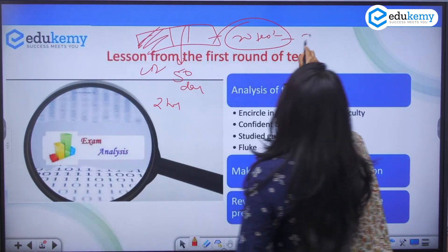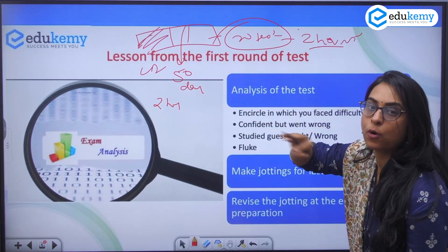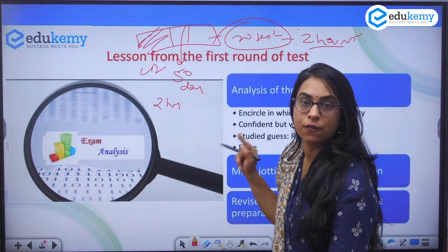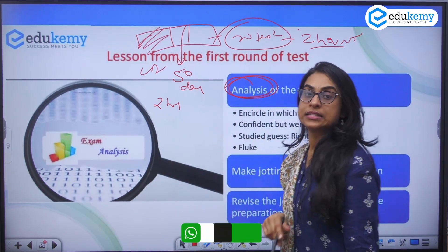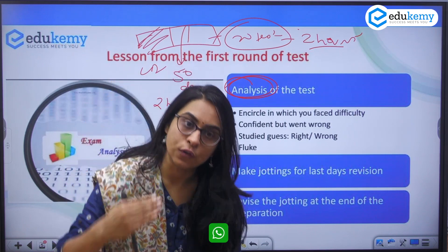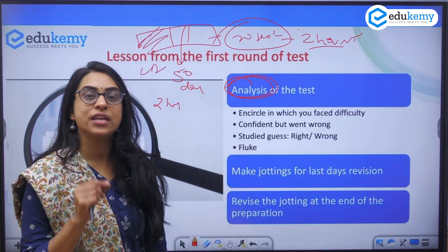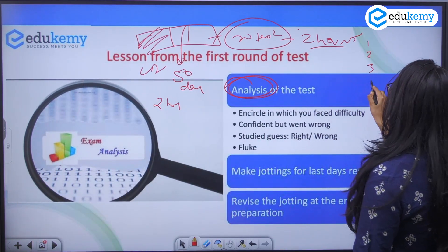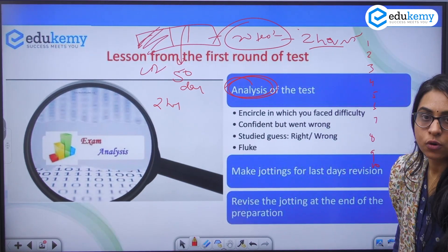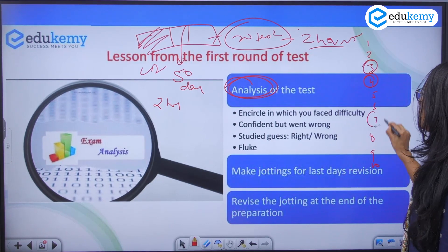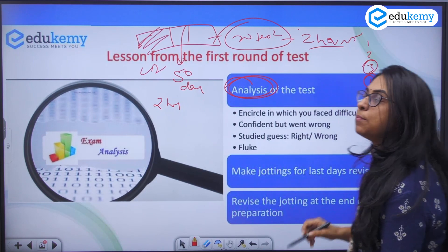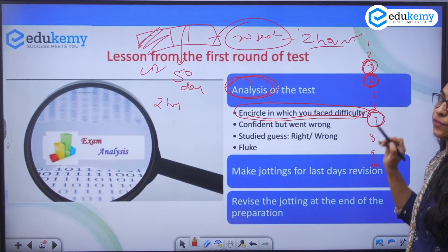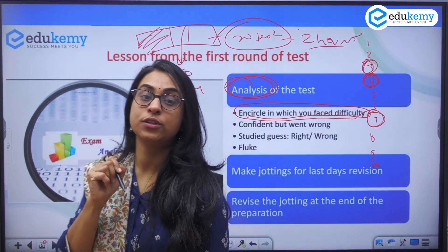These 20 tests require that you sit with the OMR sheet in exam-like conditions and analyze the test afterward. While solving the paper during those two hours, whichever question you felt you were not very confident about or just made a guess on — please encircle those questions in which you face difficulty, so you know exactly which questions posed a problem.